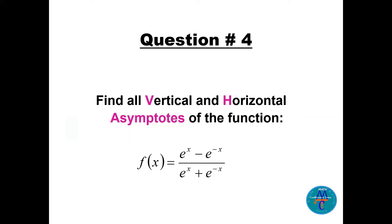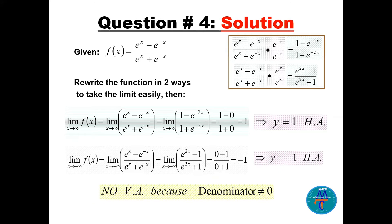Question number four: find all vertical and horizontal asymptotes of f(x) = (e^x - e^(-x)) / (e^x + e^(-x)). We need to rewrite this function in two ways.